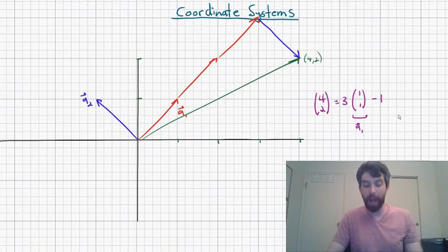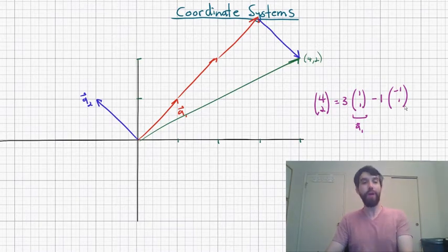And then I subtract off, so this is going in amount minus 1 in the minus 1, 1 direction. And that if you add those together, that linear combination, you're going to get to 4, 2.